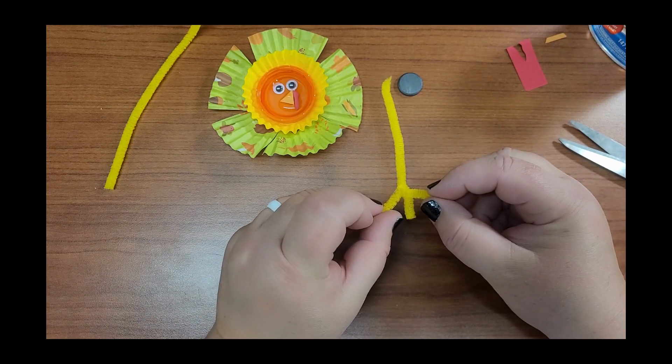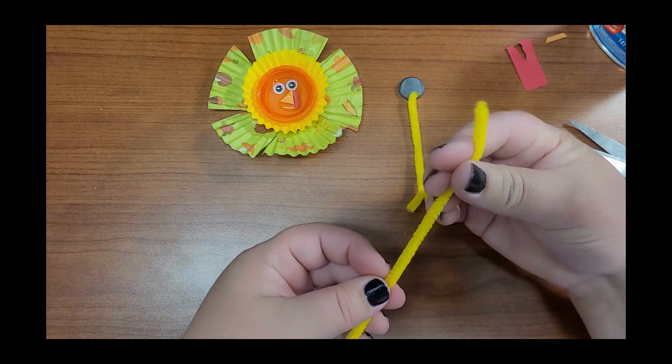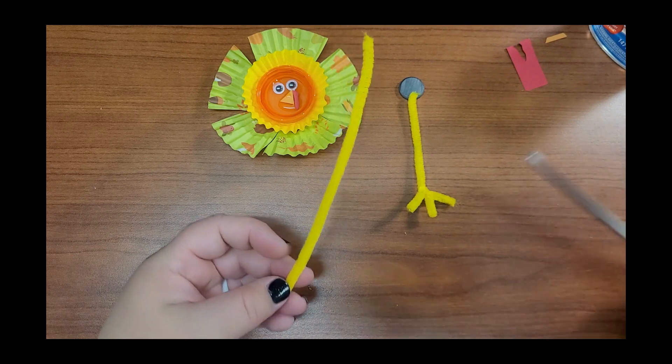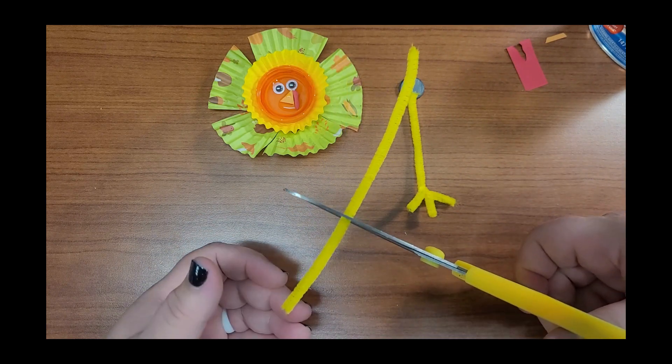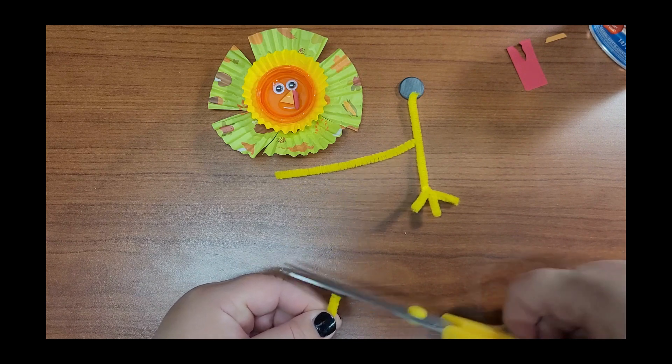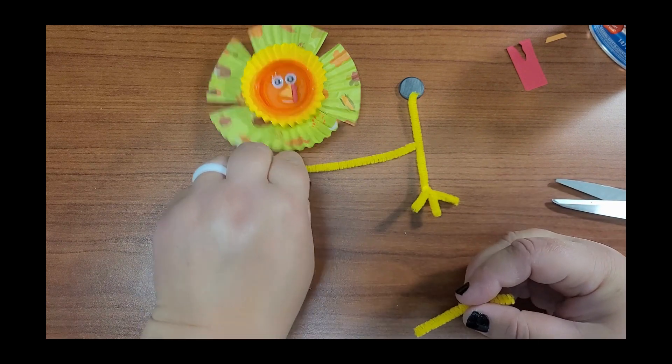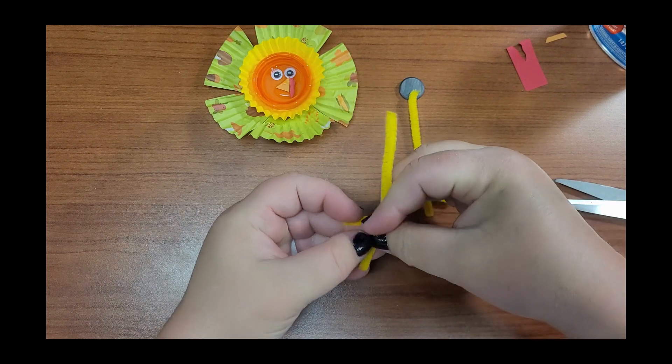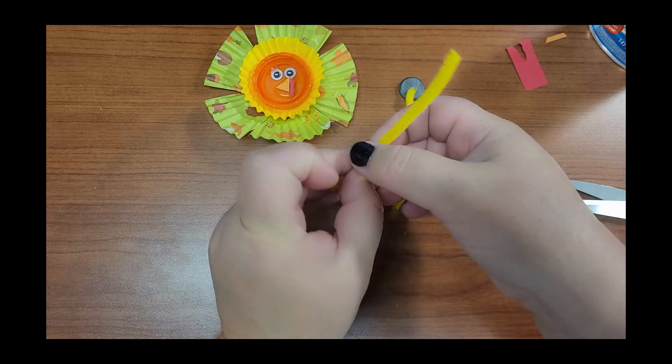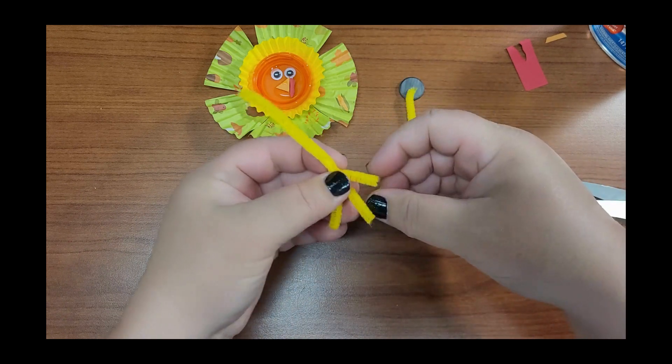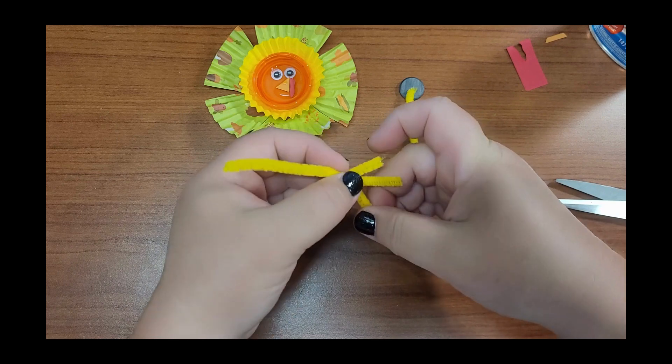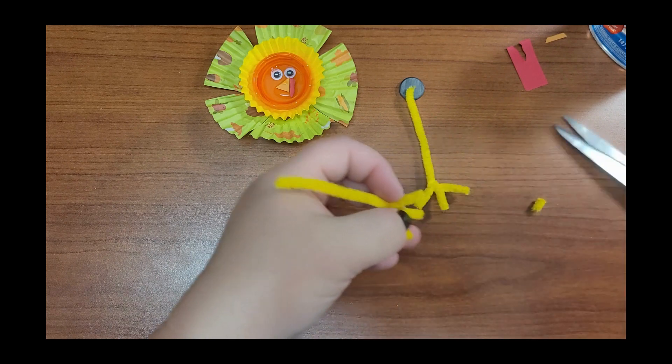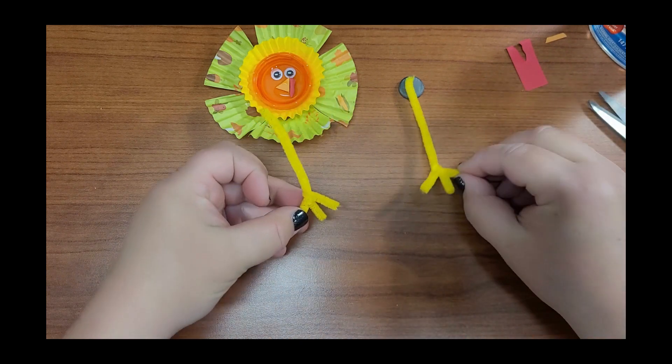So first you will cut the pipe cleaner in half to make two legs, and then when you have half of it, you're going to cut a little bit off the bottom there. You'll take the longer part and then you're going to wrap that small part you just cut off around the bottom to make kind of like three turkey toes. And if you want them to be even, then after you wrap them you can cut them. And then you do that twice and you have two turkey's feet.